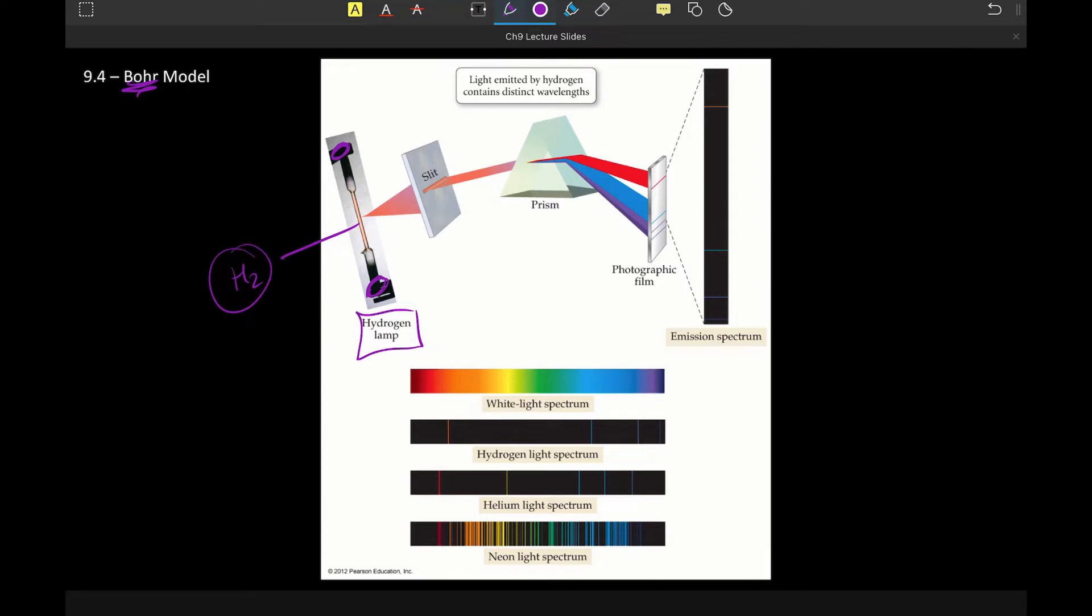And we take it and we focus it through a slit and then a prism. And then it turns out that when we do that with hydrogen light, we only see three bands of color. Three bands of color as opposed to that continuous spectrum that we saw when we took a white light. So now we're only seeing three bands. And it turns out helium has its own spectrum, neon has its own spectrum, and a lot of things have their own fingerprint spectrum when subjected to a light emission test.